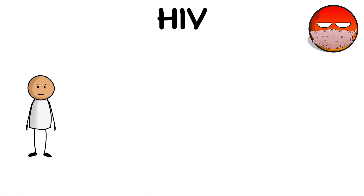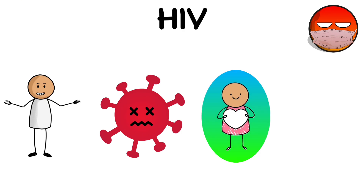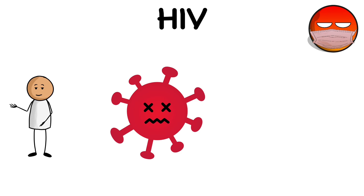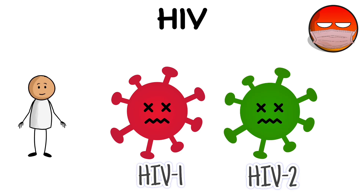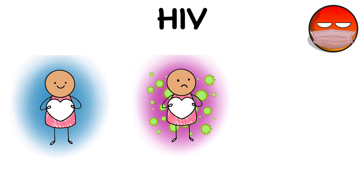HIV. HIV, human immunodeficiency virus, causes AIDS — acquired immunodeficiency syndrome — which affects the human immune system, making the body more vulnerable to infections and tumors. HIV viruses are divided into two types: HIV-1 and HIV-2. AIDS develops when HIV destroys the immune system so much that the body becomes unable to effectively fight infections and tumors.